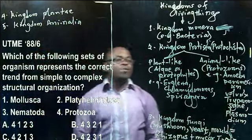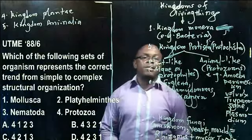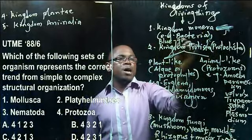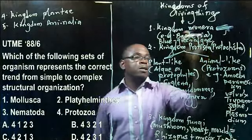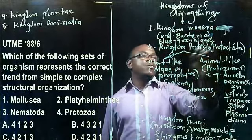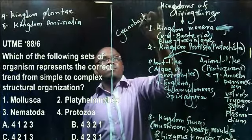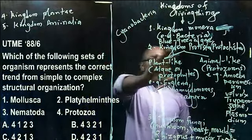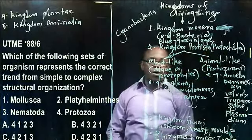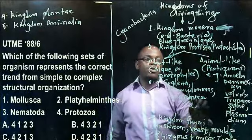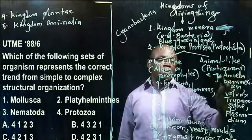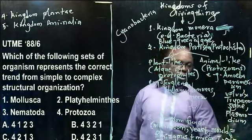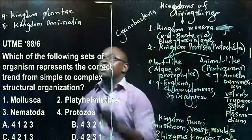So as a preview: we have five kingdoms of living things. Kingdom Monera, where we have bacteria and also the blue-green algae, commonly called cyanobacteria. Kingdom Protista, with plant-like organisms called algae or protophytes — examples: Euglena, Chlamydomonas, Spirogyra — and animal-like protists called protozoans, including Amoeba, Paramecium, Volvox, Trypanosome, and Plasmodium. Then Kingdom Fungi, Kingdom Plantae, and Kingdom Animalia.